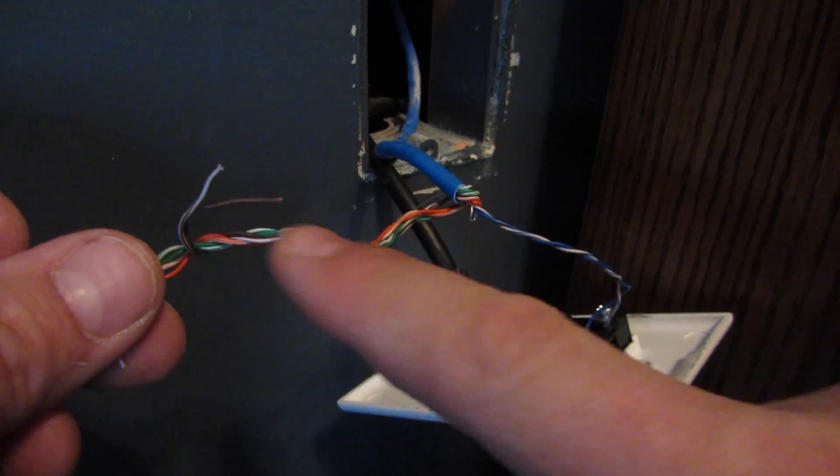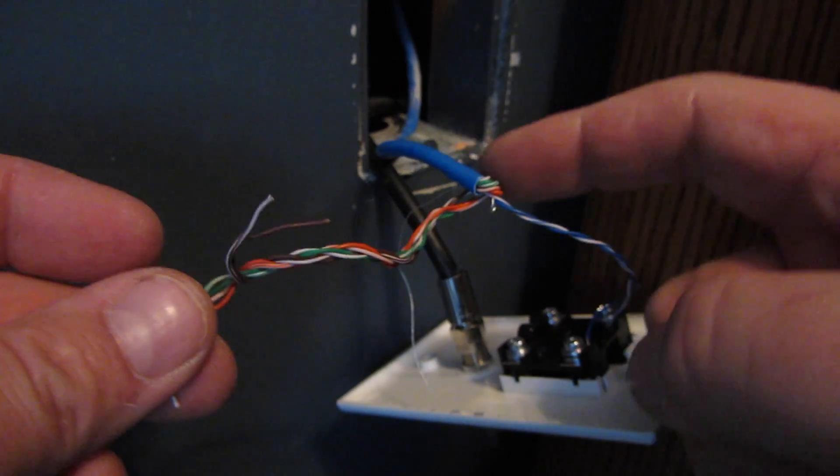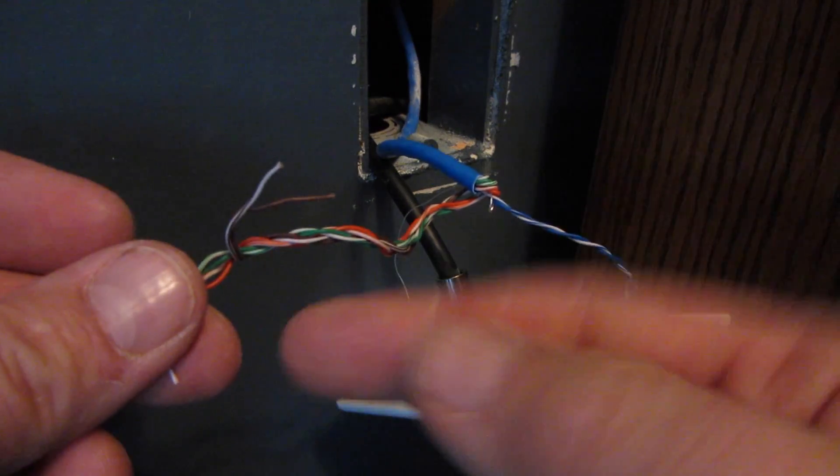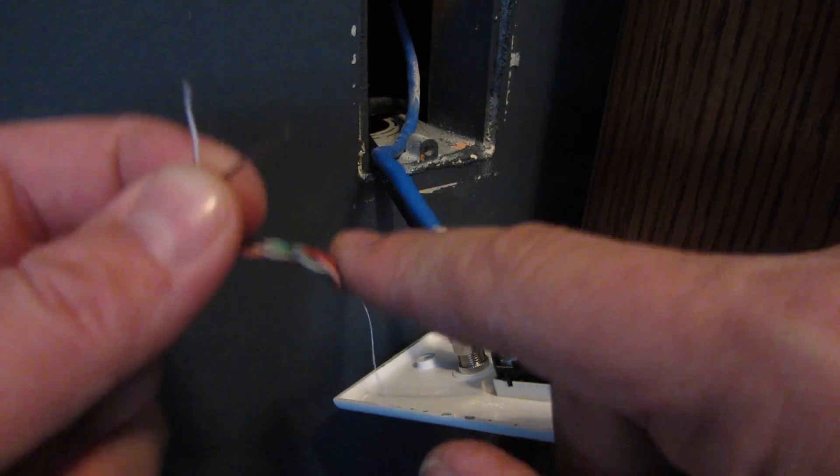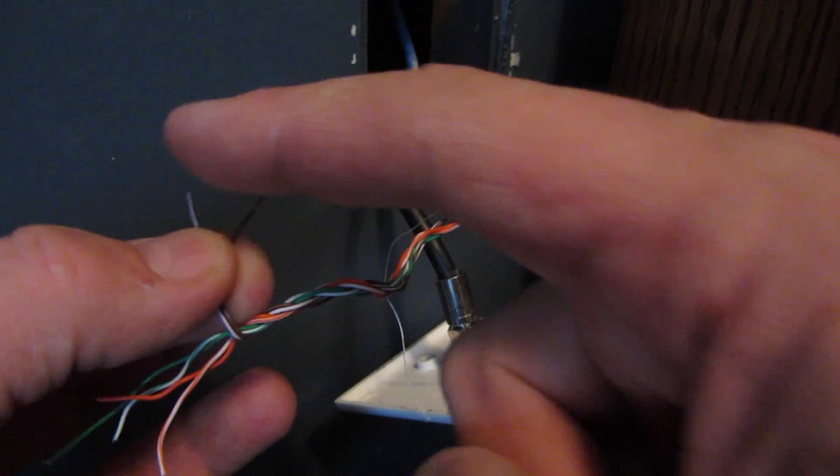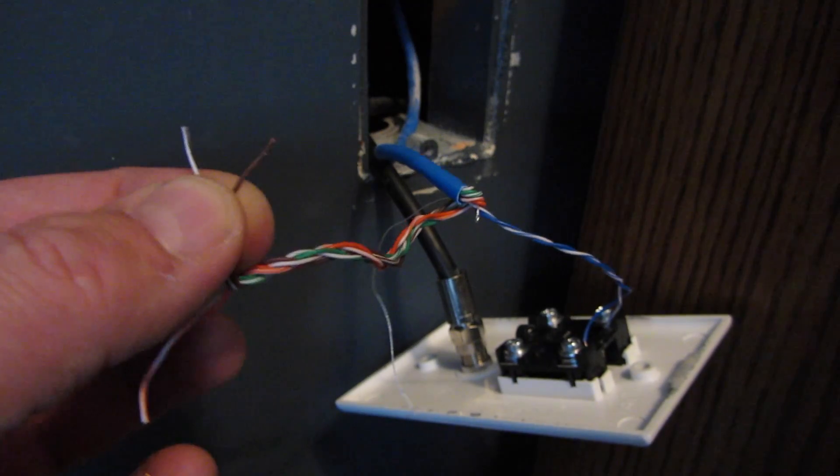As you can see I have unraveled the unused wires on this Cat5 line. I have also taken out the brown and the brown and white. I am going to use these two wires to hook my continuity tester.